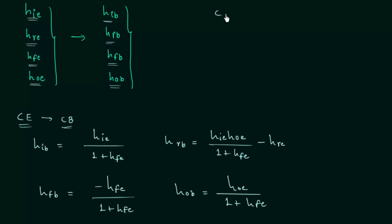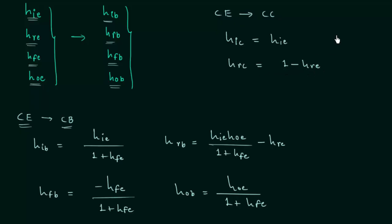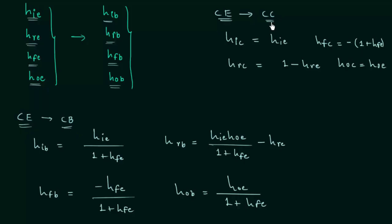Now we will convert the H parameters from common emitter mode to common collector mode. HIC is equal to HIE. HRC is equal to 1 minus HRE. HFC is equal to negative of (1 plus HFE). And HOC is equal to HOE. This is the set of formulas for conversion of H parameters from common emitter mode to common collector mode.